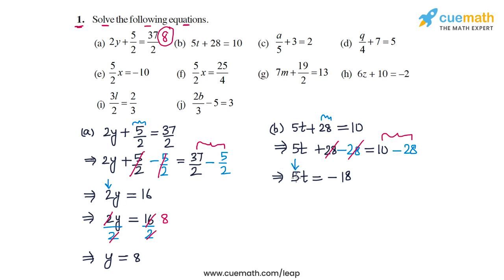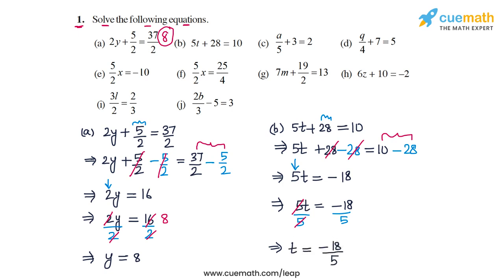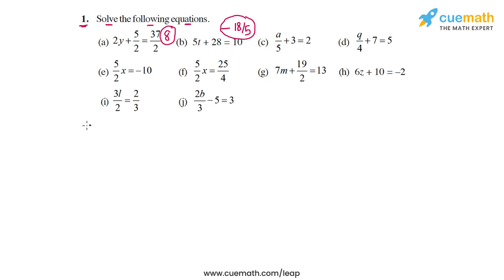Now we need to get rid of this 5 by dividing by 5 on both sides. So we have 5t equal to minus 18 and we divide both sides by 5. The 5s cancel out on the LHS, and we are left with t is equal to minus 18 by 5. So the solution of the equation in part b is minus 18 by 5.